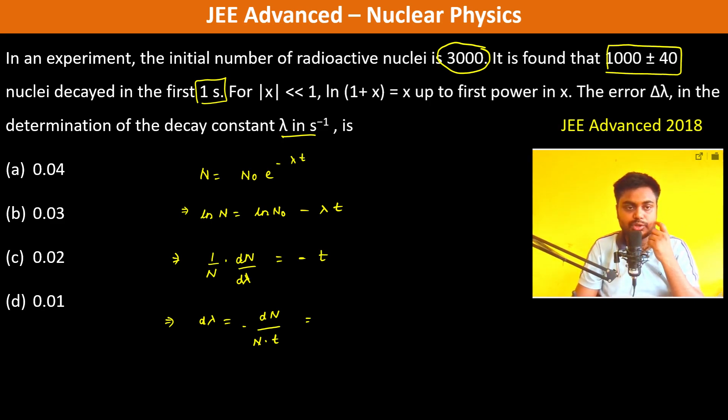The nuclei decayed in the first one second is 1000 ± 40. So ΔN = 40. Now N is the number of